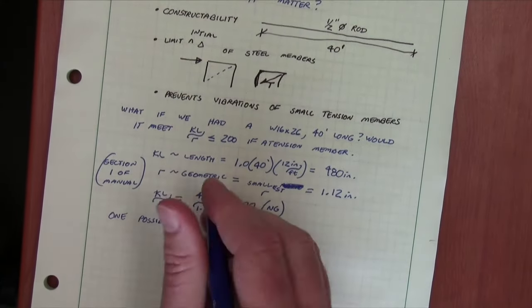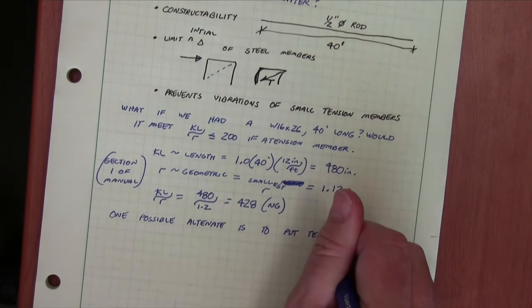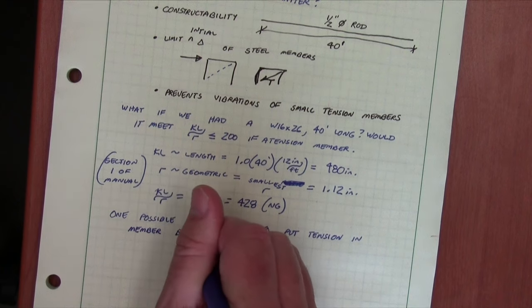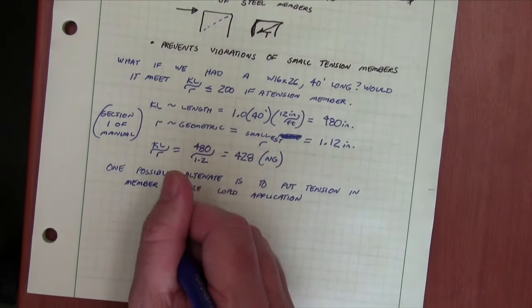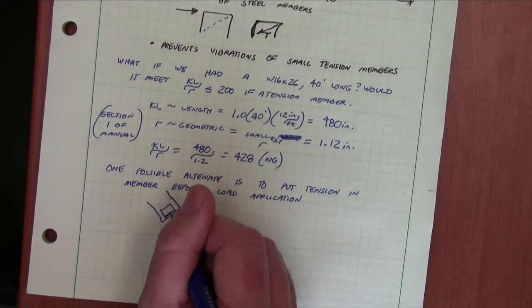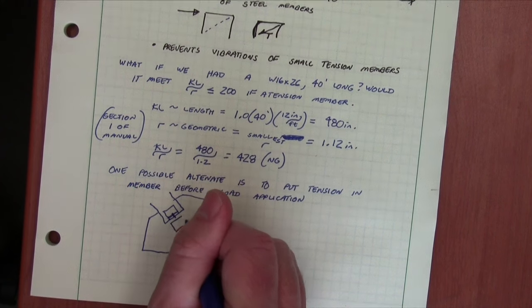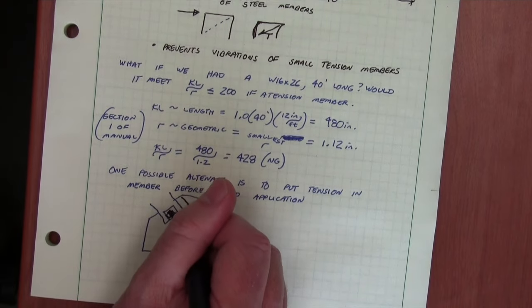And so there's several different solutions. We could pick a bigger member. We could also put some initial tension in this member before the load application so that the member was effectively in tension before any load was applied and we had effectively negated any need to meet KL over R less than 200.